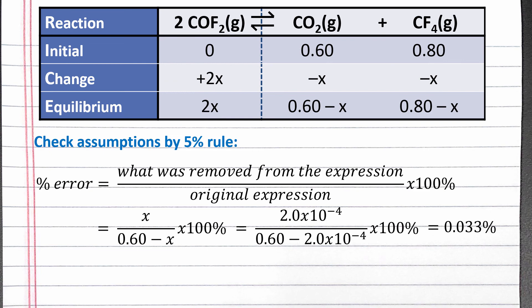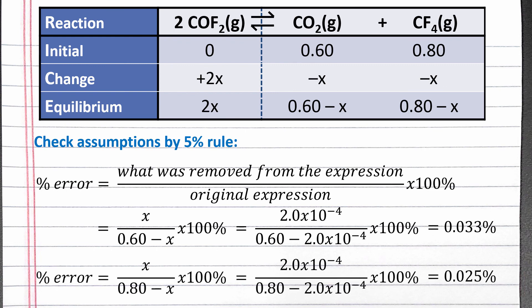We can check the second assumption in a similar manner. We assumed 0.80 minus x was equal to 0.80. So we removed x from the expression. x goes into the numerator again, and 0.80 minus x goes in the denominator. This simplifying assumption has an error of 0.025%, which is also far below 5%. This assumption is also valid.